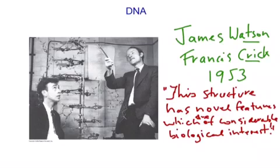And in 1953, two scientists, James Watson and Francis Crick, were the first to discover its helical, double helical structure. And a famous quote has it that they say, this structure has novel features which are of considerable biological interest, which may be one of the greatest scientific understatements of all time.